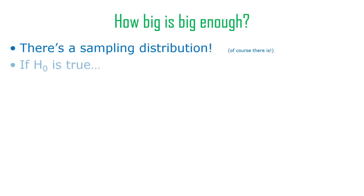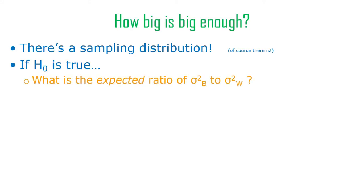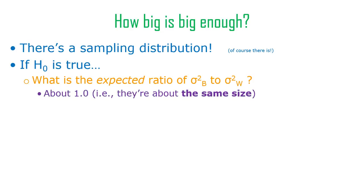So how big is big enough for that ratio? We need a sampling distribution. That ratio reduces the between-groups variance and the within-groups variance to one single number — you divide one thing by another, you've got one number. There's a sampling distribution of that number. That number is called F, and there's a sampling distribution of F — the sampling distribution of the ratio of between-groups variance to within-groups variance in any given situation. If the null hypothesis is true, the expected ratio of between to within groups variance is about one, more or less.